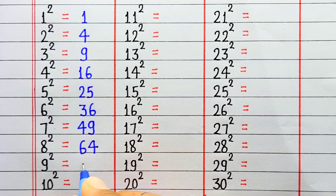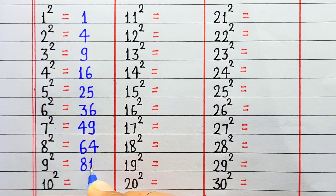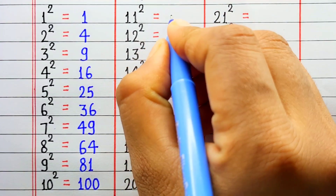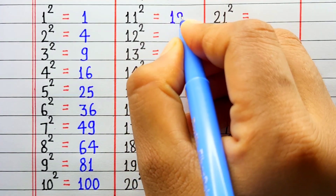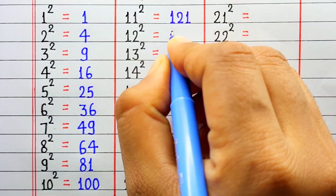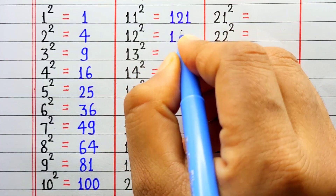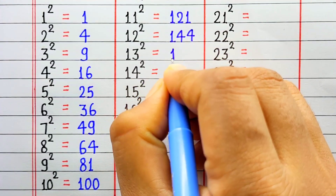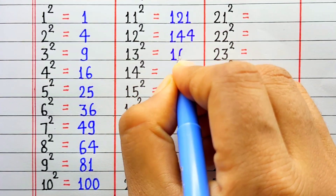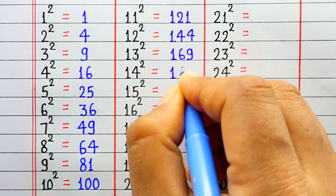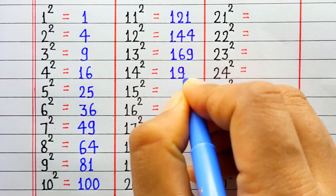Square of 9 is 81. Square of 10 is 100. Square of 11 is 121. Square of 12 is 144. Square of 13 is 169. Square of 14 is 196.